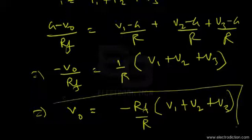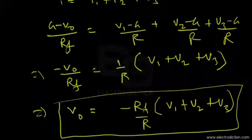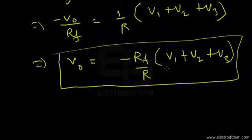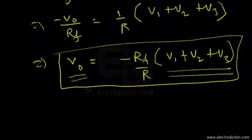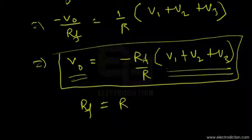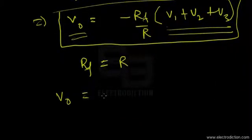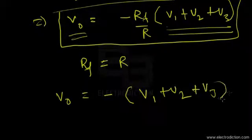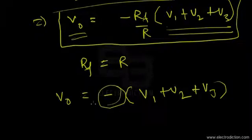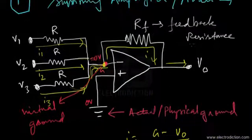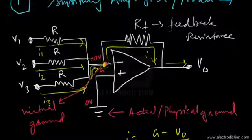The output voltage is a multiple of the sum of the input voltages. If we construct the circuit such that RF = R, then RF/R = 1, and we get the output voltage equal to the negative of the sum of the input voltages. This negative sign arises because the input assembly is being applied at the inverting input terminal of the op-amp.